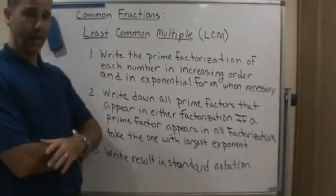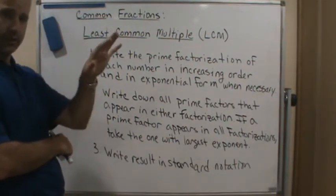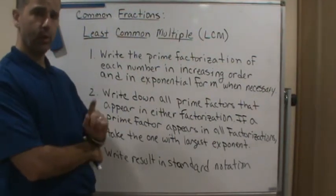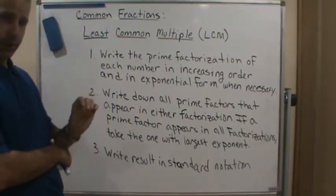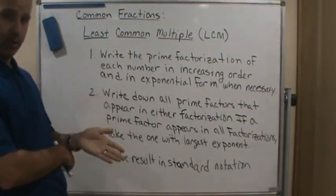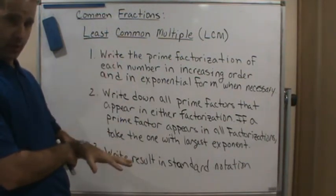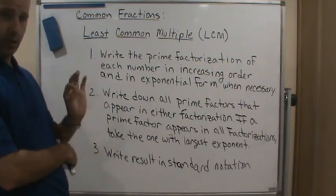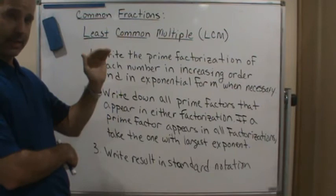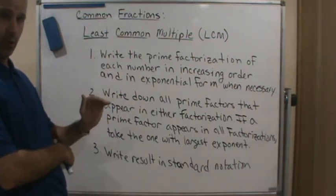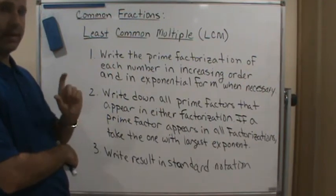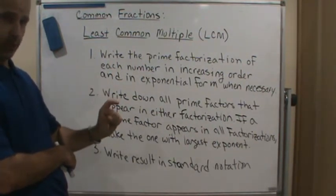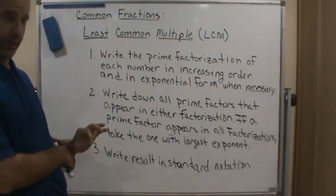Step two: you're going to have a list of all the prime factorizations of the numbers. You want to write down all of the prime factors that you see among the factorizations. If there is a prime factor that is common in more than one or all of the factorizations, then you want to take the one that has the largest exponent and put it in your list.